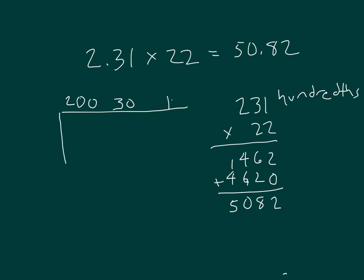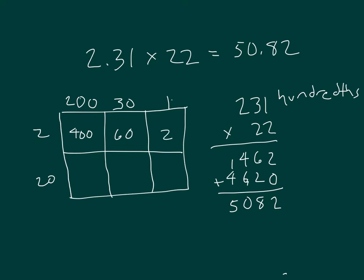Here's an area model for that same problem. 2 times 200 is 400. 2 times 30 is 60. And 2 times 1 is 2. If I was to add those numbers together, you see that I do get 462.